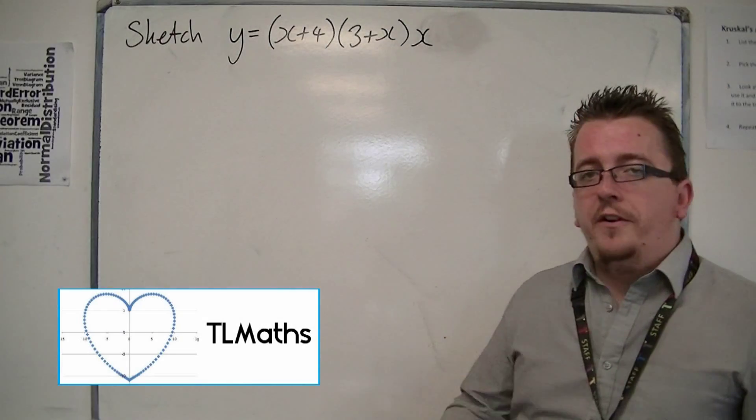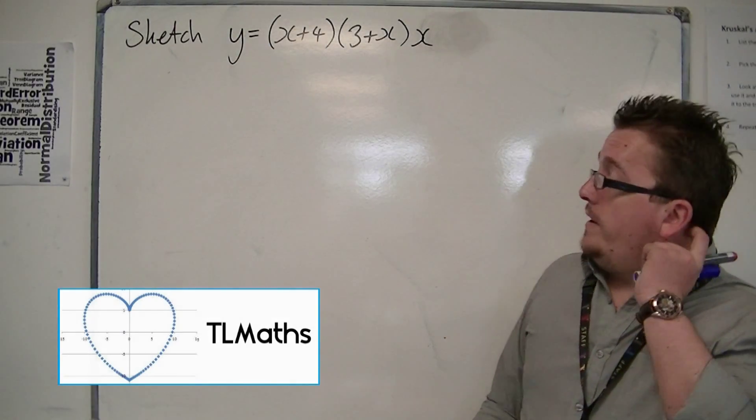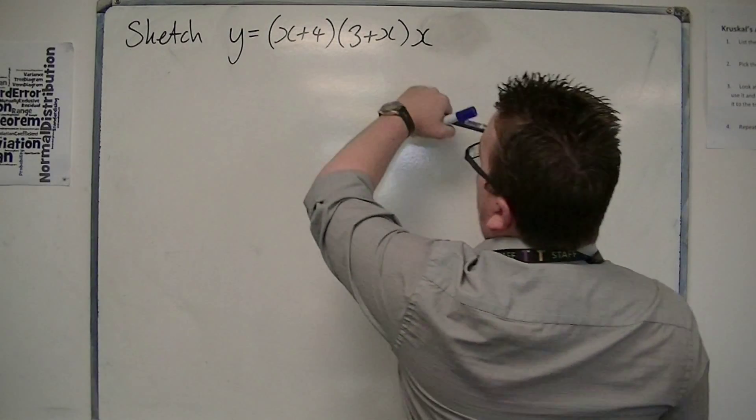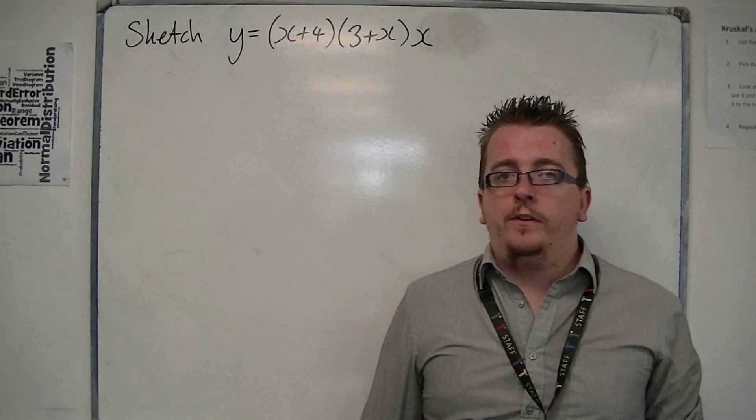Okay, in this example, we're going to sketch another cubic. It's written as three linear terms again. We've got x plus 4, 3 plus x, and times x.